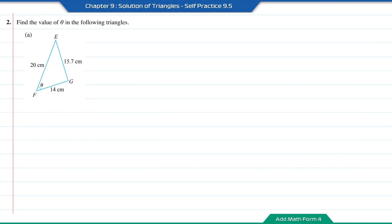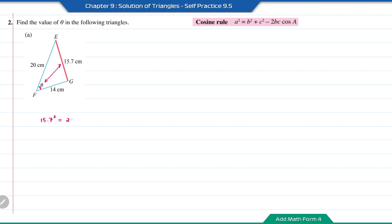Question number 2: Find the value of theta in the following triangles. In diagram A, the lengths of all 3 sides are given, so we can find any angle inside the triangle using the cosine rule. The angle theta we want to find is opposite the length EG, which is 15.7. Using the cosine rule: 15.7 squared equals 20 squared plus 14 squared minus 2 times 20 times 14 cos theta.